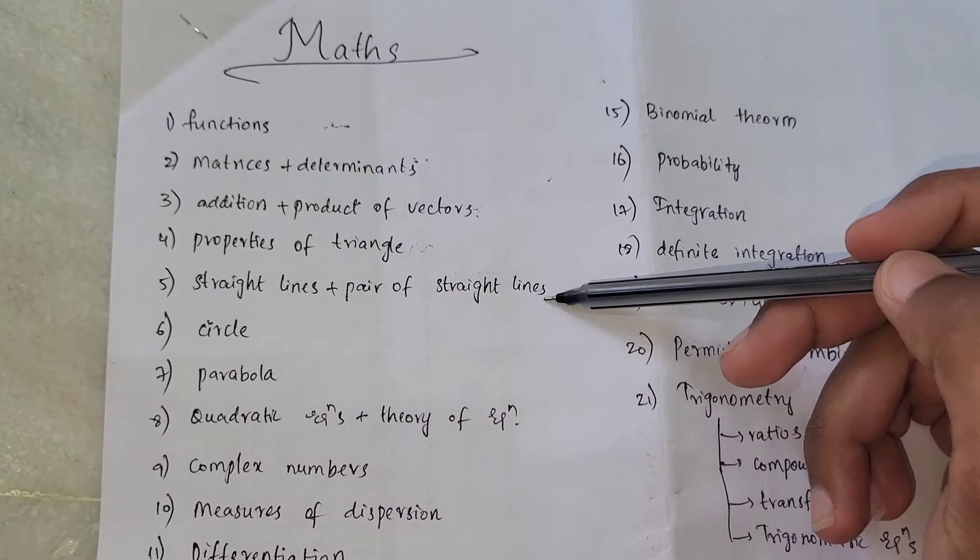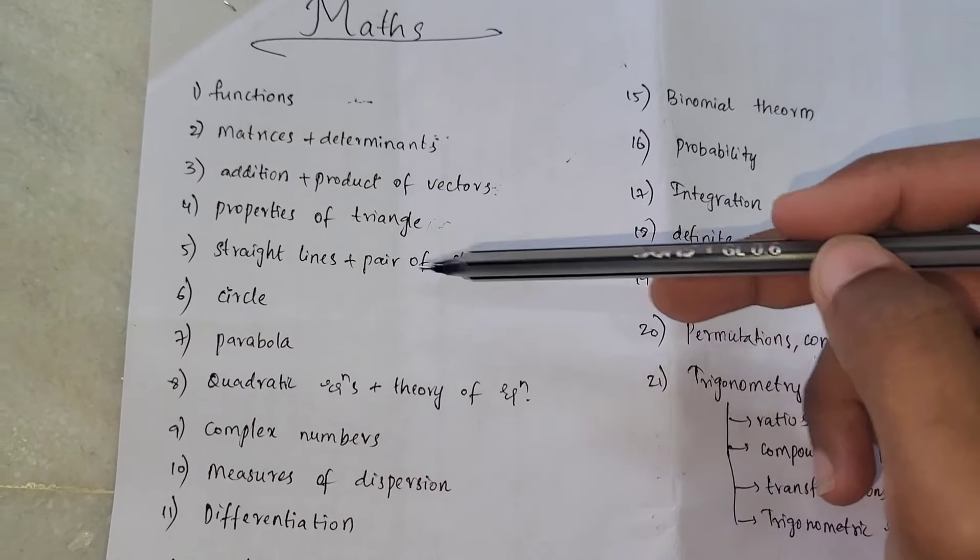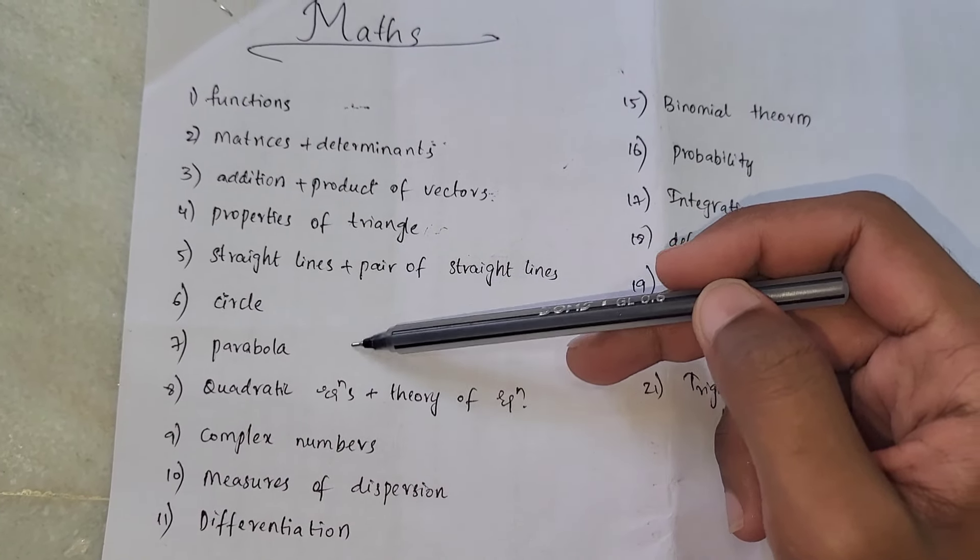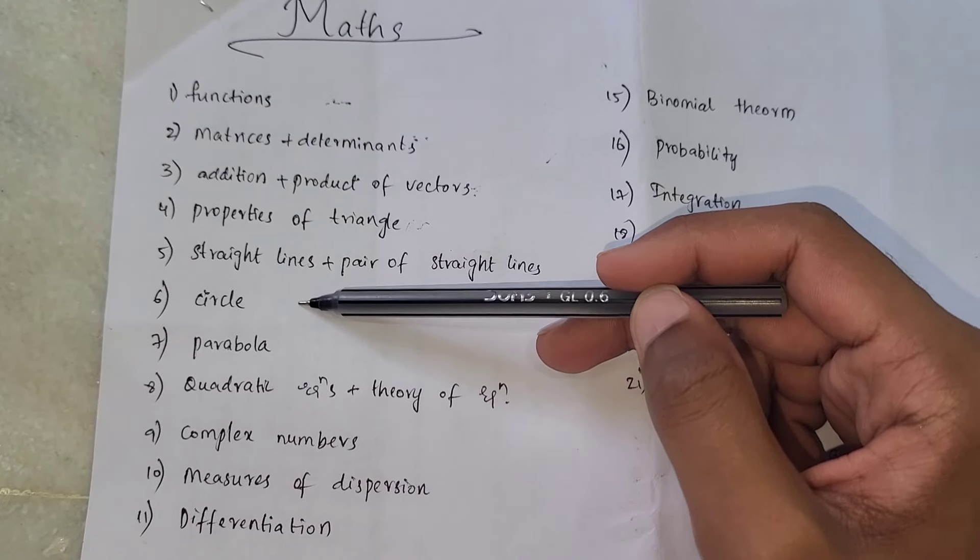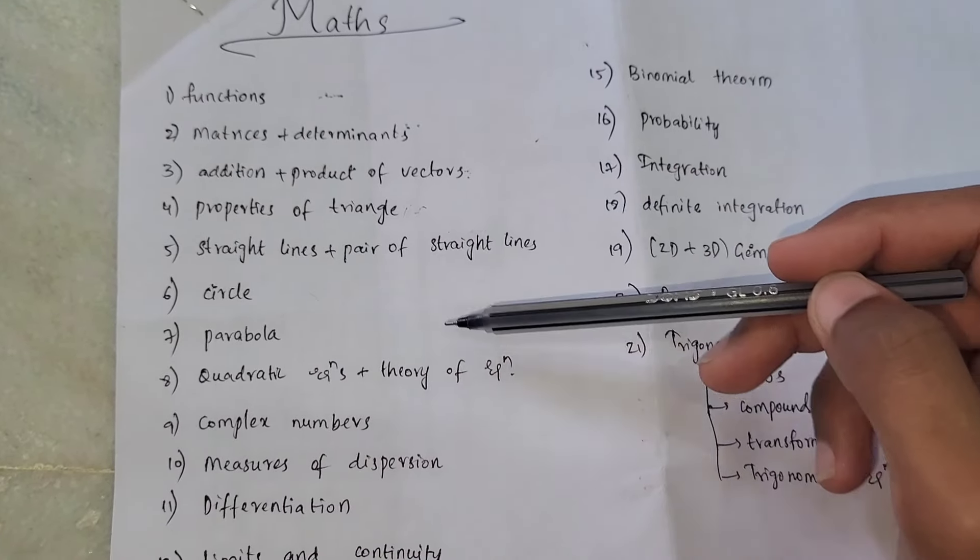Next, straight lines and pairs of straight lines - also easy. Next, I have circles, parabola, ellipse, hyperbola. You don't have to do both. Circles and parabola are easy.